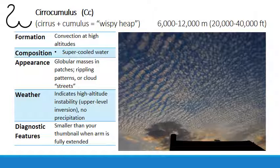Cirrocumulus clouds are composed of droplets of supercooled water and ice, forming as a result of convection at very high altitudes. You can most easily identify them by their puffy form — distinguishable from other cumulus species by their tiny size. A common rule is that if they are smaller than the tip of your thumb when you extend your arm and hold your thumb up, and you can fit multiple puff balls inside the width of your thumb, then they are very high up and you should correctly call them cirrocumulus.